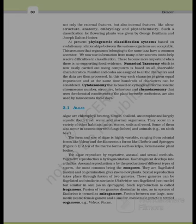The form and size of algae is highly variable, ranging from colonial forms like Volvox and filamentous forms like Ulothrix and Spirogyra. A few marine forms such as kelps form massive plant bodies. Algae reproduce by vegetative, asexual and sexual methods. Vegetative reproduction is by fragmentation — each fragment develops into a thallus. Asexual reproduction is by production of different types of spores, the most common being zoospores, which are flagellated and on germination give rise to new plants.